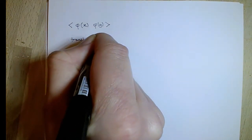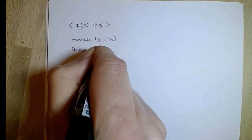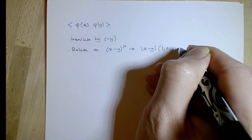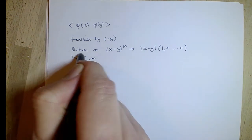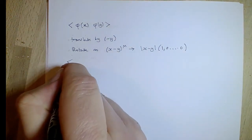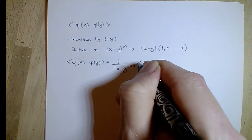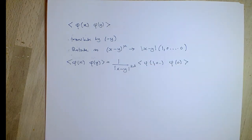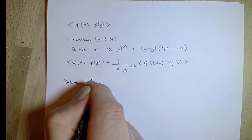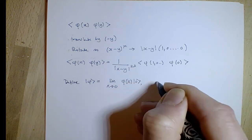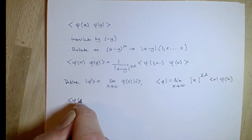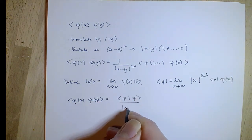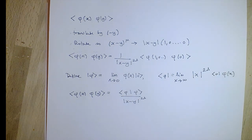These properties are enough to fix two- and three-point functions using just global conformal transformations. For a two-point function: we can translate one point to the origin, rotate so the vector is along one direction, and rescale so that field is at position (1,0,0,...). The two-point function is entirely determined by its value at those special points. Defining bra and ket in-and-out states, the two-point function is equally given by the overlap of these two states times a universally defined factor for a scaling field.